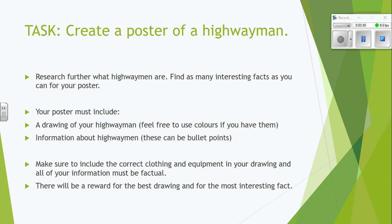I know that text hasn't given you everything, but this is why we're going to be doing this task today. This task is to create a poster of a highwayman. The first thing you need to do is research further what highwaymen are. You've got some basic knowledge from those texts you've just read — now I want you to find out a little bit more. Find as many interesting facts as you can for your poster. You can do your poster in your exercise book on lined paper, or if you have any plain paper you might want to use that and stick it into your book.